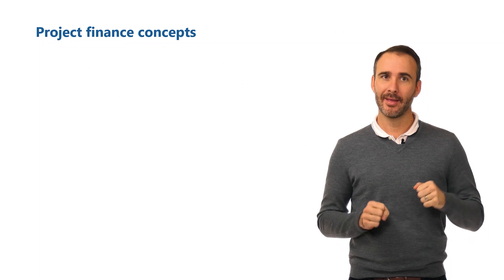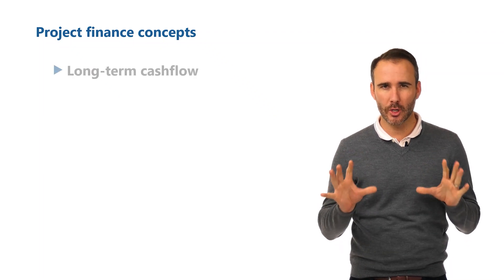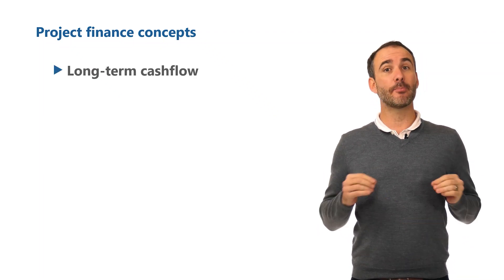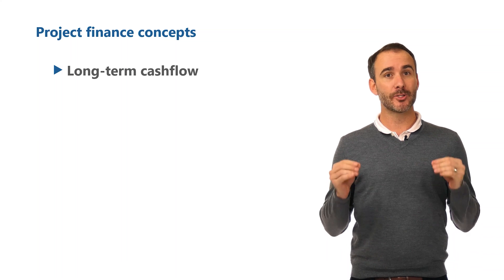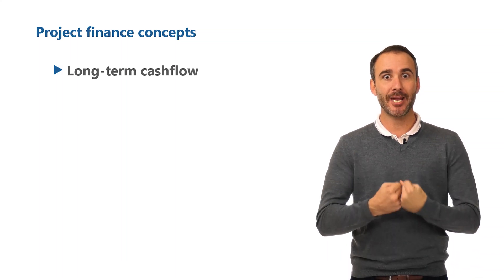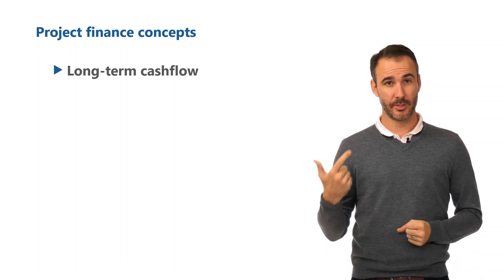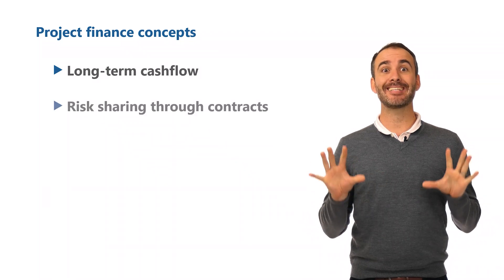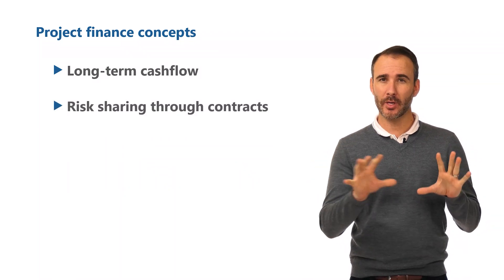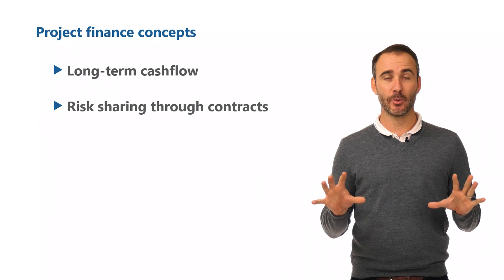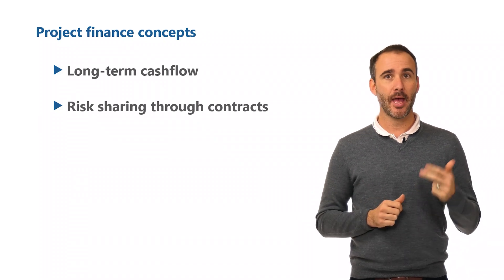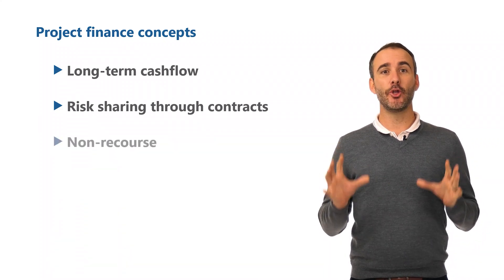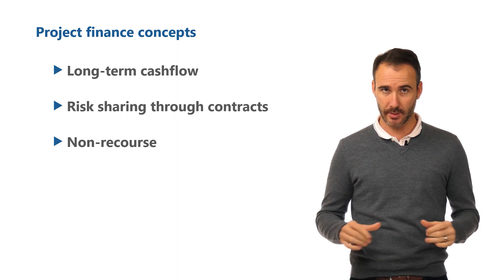Having come this far in the course, you're familiar with our three core concepts of project finance. One, it's all about long-term promises of cash flow — the project is worth something so long as it's operating and generating this cash flow. Two, risk sharing is allocated in contracts to capable parties best able to deal with that risk. And three, it's non-recourse to the project's sponsors.